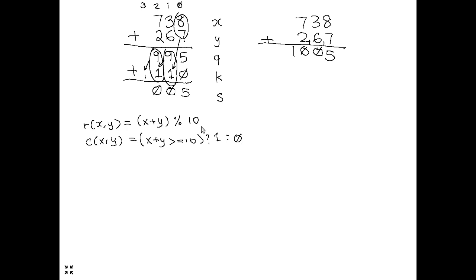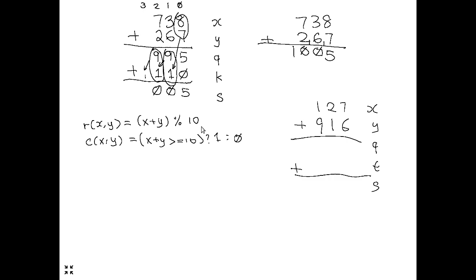Let's do another example: 127 plus 916. We have rows X, Y, Q, K, and S. Q0 is the single-digit sum of 7 and 6, which is 3. Q1 is the single-digit sum of 2 and 1, which is 3. Q2 is the single-digit sum of 1 and 9, which is 0. K0 is always assumed to be 0 since there's no addition to the right of this column.